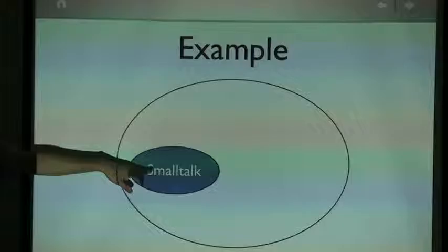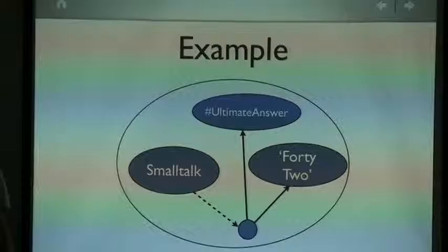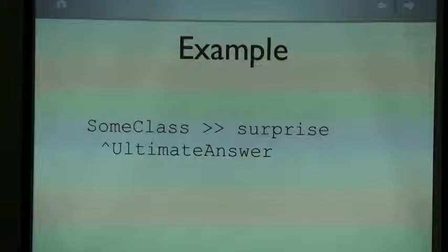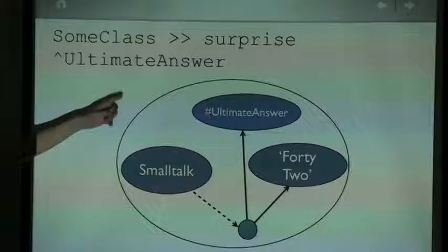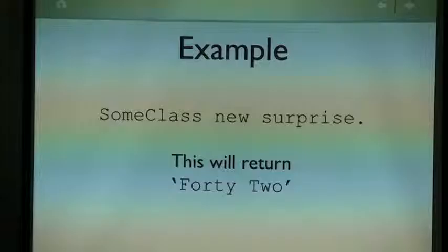We have the Smalltalk dictionary, and we use a key that we call 'ultimate answer' and put the value — the string '42'. We have the dictionary, and we create a new association with the key and the value. We can have a method that uses this global variable. All the variables, except for the globals, don't use the object directly — they use the association. Then this 'ultimate answer' will use this association.